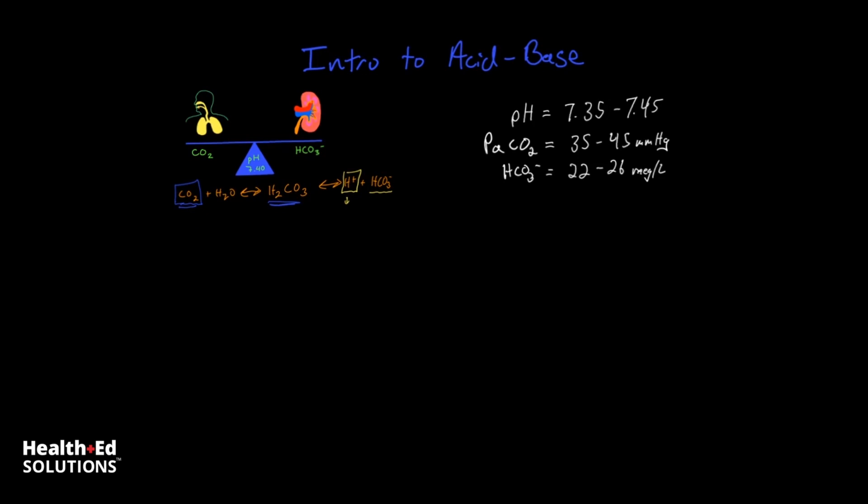Okay, so let's take a look at this. Say we have a line here that represents our pH, and we have normal pH values of between 7.35 and 7.45. Anything greater than this is going to be alkalotic. Anything less than 7.35 is going to be acidic.